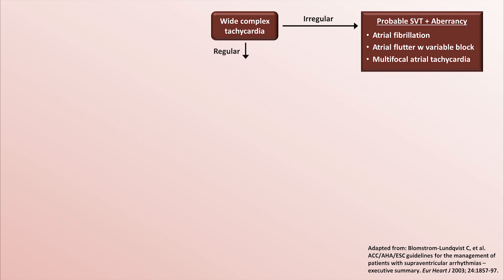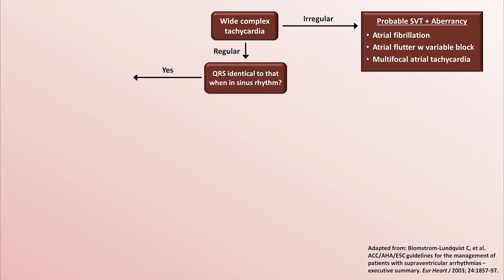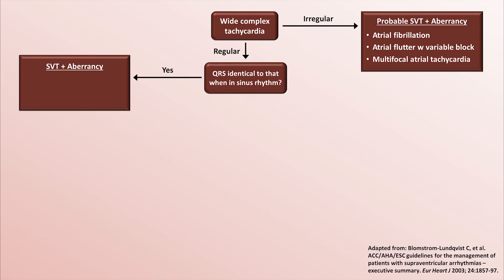If the tachycardia is regular, one should next ask if the QRS is identical to that while the patient is in sinus rhythm, provided that a baseline EKG is available. If the wide QRS is the same as when in sinus rhythm, this is indicative of SVT with aberrancy. One thing to keep in mind here is that during antidromic AVRT — a re-entry circuit in which the impulse travels down the accessory pathway and back up the His bundle and AV node — the QRS complex can be wider than it is during sinus rhythm, but otherwise the polarity of each lead's QRS complexes can be relatively similar.